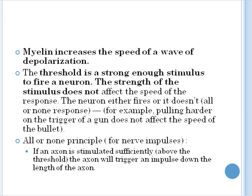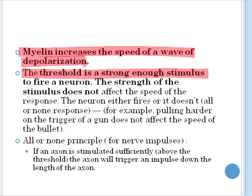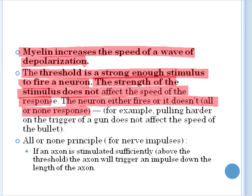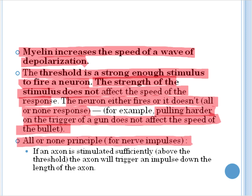When we looked at neuron structure, myelin increased the speed of a wave of depolarization. The threshold, as I've previously mentioned, is a stimulus which is strong enough to fire a neuron. And the strength of the stimulus doesn't affect the speed of the response. It is a neuron either firing or it doesn't. It's an all or none response. Pulling harder on the trigger of a gun doesn't affect the speed of the bullet. The all or none principle simply states if an axon is stimulated sufficiently, that being above its threshold, the axon will trigger an impulse down the length of the axon.